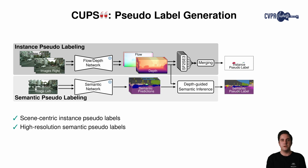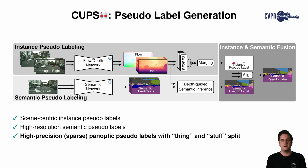Semantic pseudolabeling employs a state-of-the-art unsupervised semantic segmentation network. However, this network only predicts low-resolution semantic maps. We perform sliding window inference and present a depth-guided semantic inference approach to obtain high-resolution semantic pseudolabels. Finally, we align instances and semantics, resulting in high-precision panoptic pseudolabels, and estimate a thing-stuff split of the semantic pseudoclasses. Note that all pseudolabeling components are fully unsupervised.